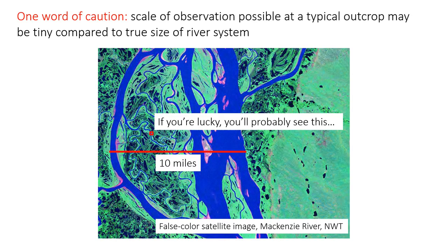To wrap up: although braided and meandering rivers are the two most important types of river morphology, there really is a continuum of river types, and there are also other types such as anastomosing rivers that we won't really talk about. One final word of caution — rivers can be quite large systems, with floodplains kilometers across, but most outcrops you'll ever be able to look at are quite small: tens of meters, maybe hundreds of meters. It's really important to remember that you're trying to piece together a system from small snapshots of information, and it may require careful observation and integration of multiple outcrops if you really want to reconstruct the entire river system from the small windows you end up having.